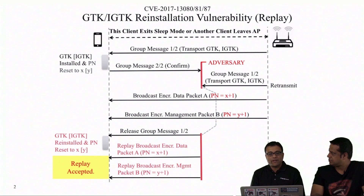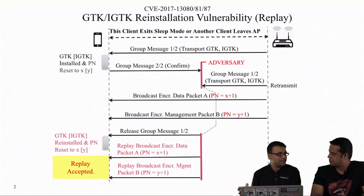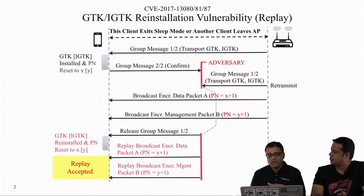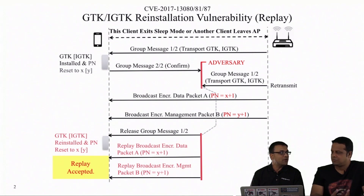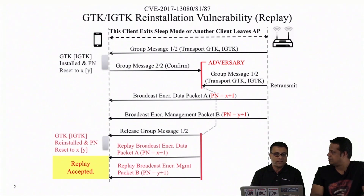Another situation is when some client leaves the access point. The AP doesn't want the group key — which should only be known to devices in its BSS — to be known to a client no longer part of the BSS. So the access point will generate a new one and distribute it to all currently connected clients. This is handled via a group key handshake, which is a shorter version of the ePol four-way handshake — just two messages.